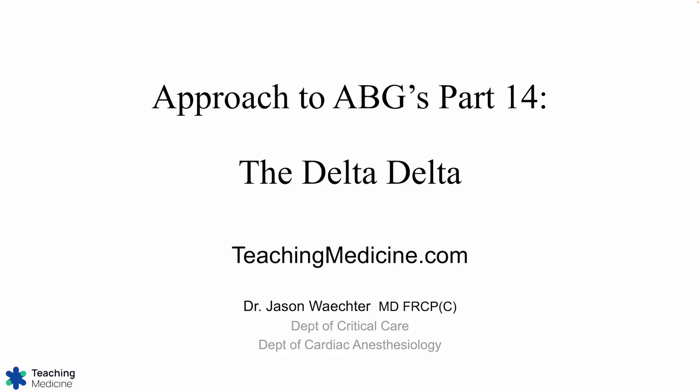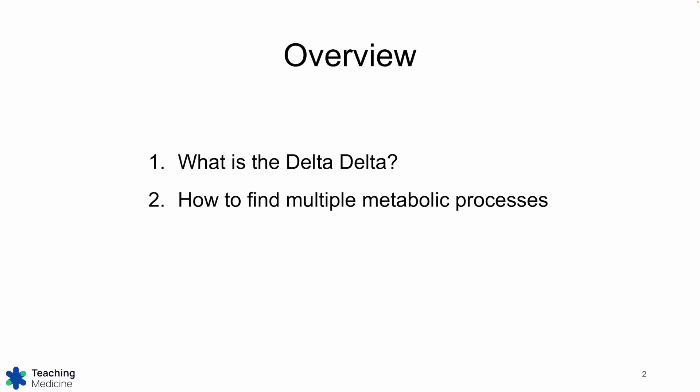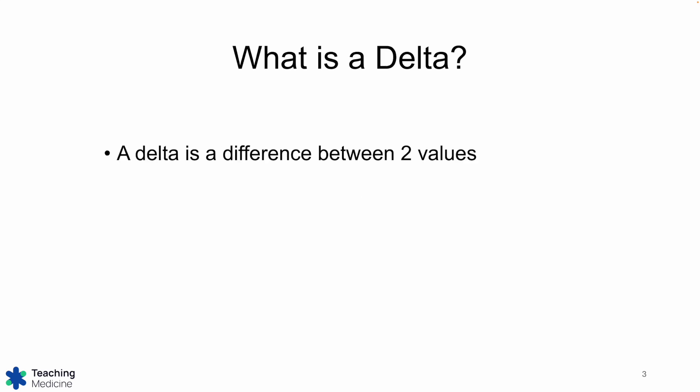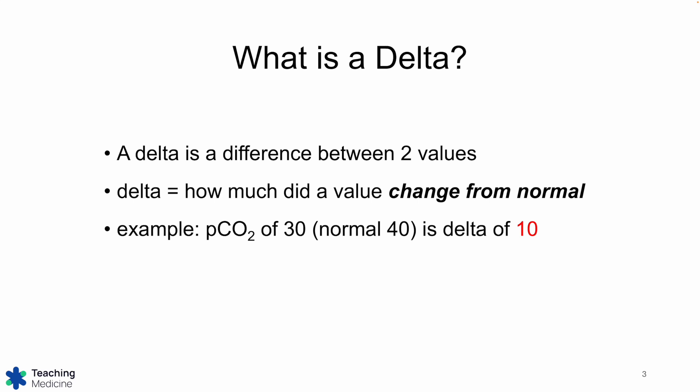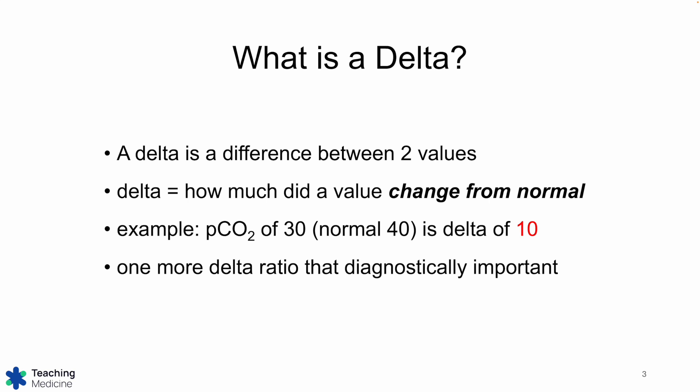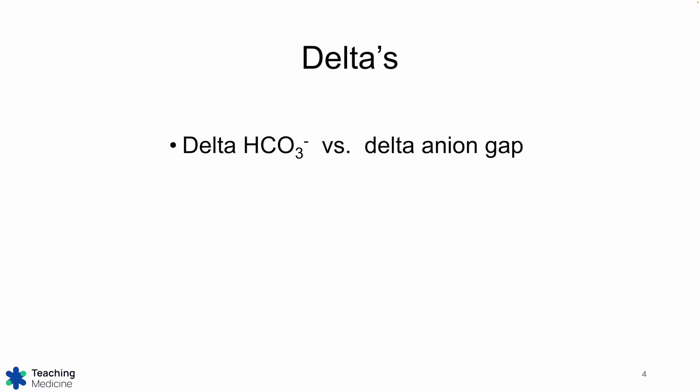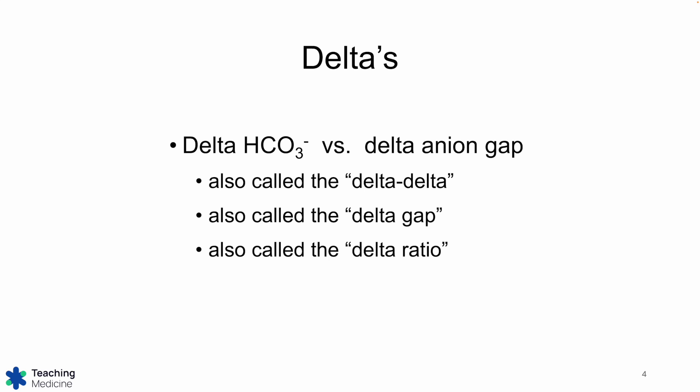Welcome to Approach to ABGs Part 14, the Delta-Delta. We're going to define what the Delta-Delta is and how to identify multiple metabolic processes in the arterial blood gas. A Delta is a difference between two values — usually a change from normal. We've used those Deltas to figure out compensation, and there's another Delta ratio that is very diagnostically important: the Delta-Bicarb versus the Delta-Anion Gap. This is called the Delta-Delta, the Delta Gap, or the Delta Ratio.